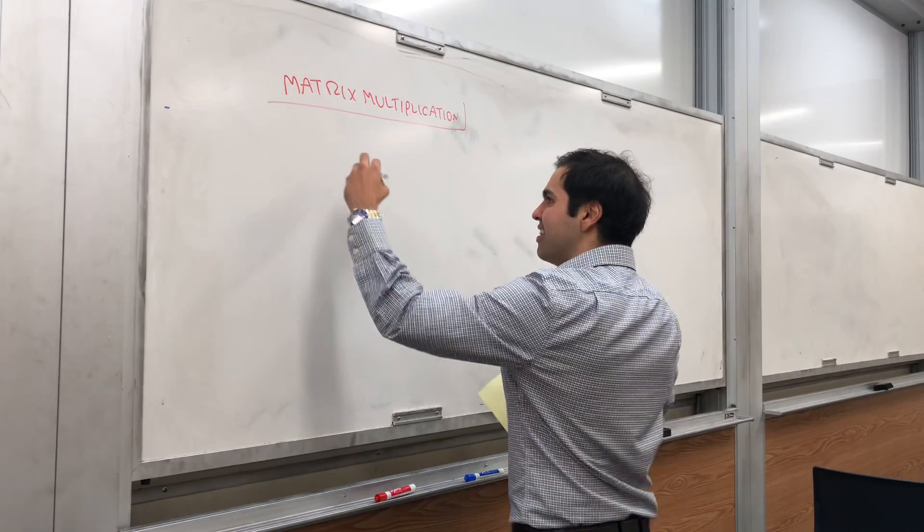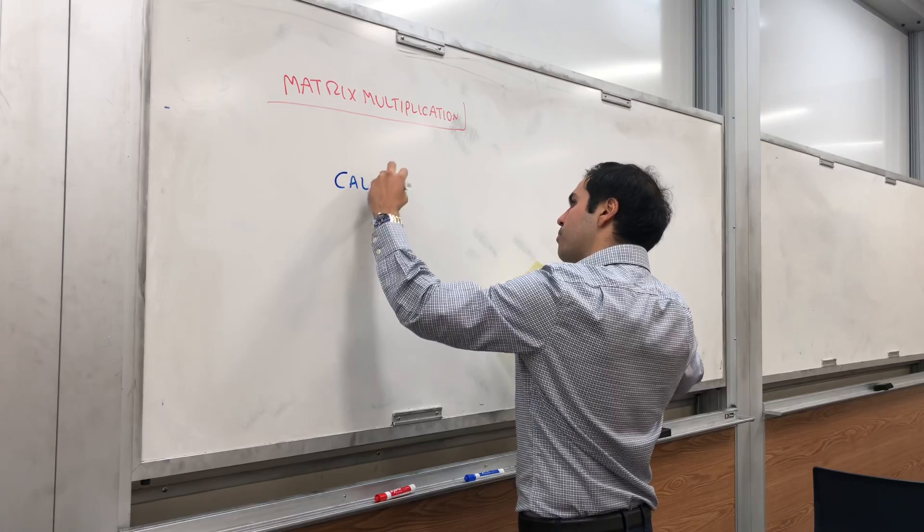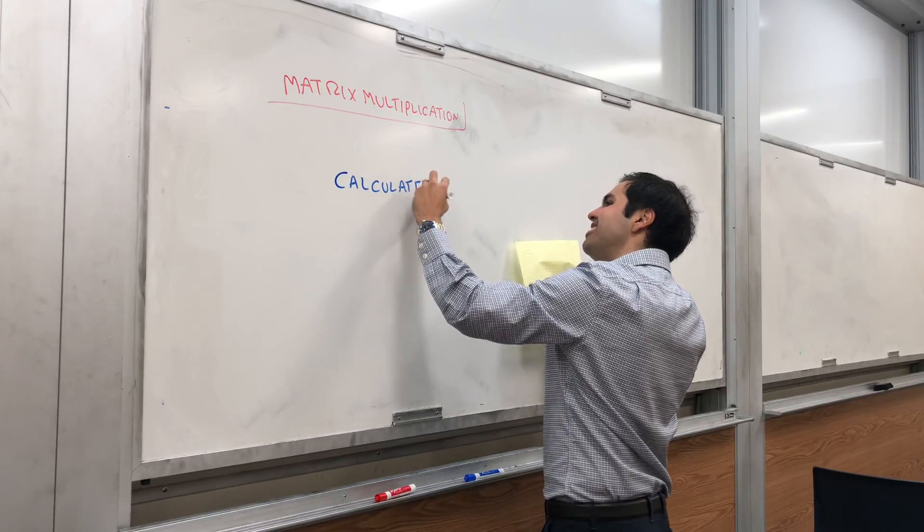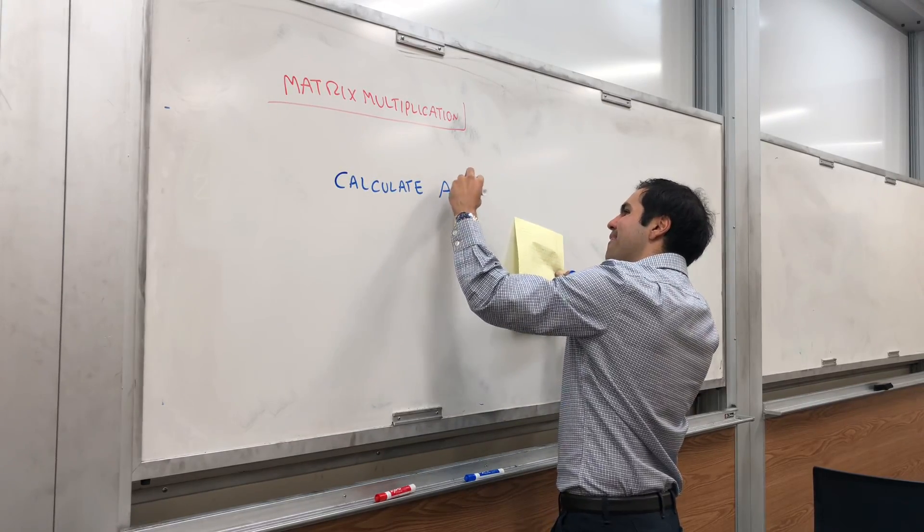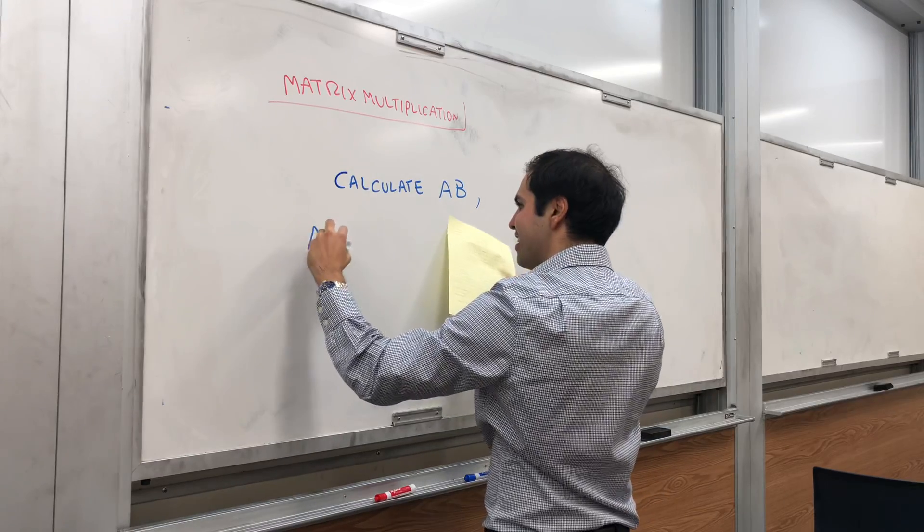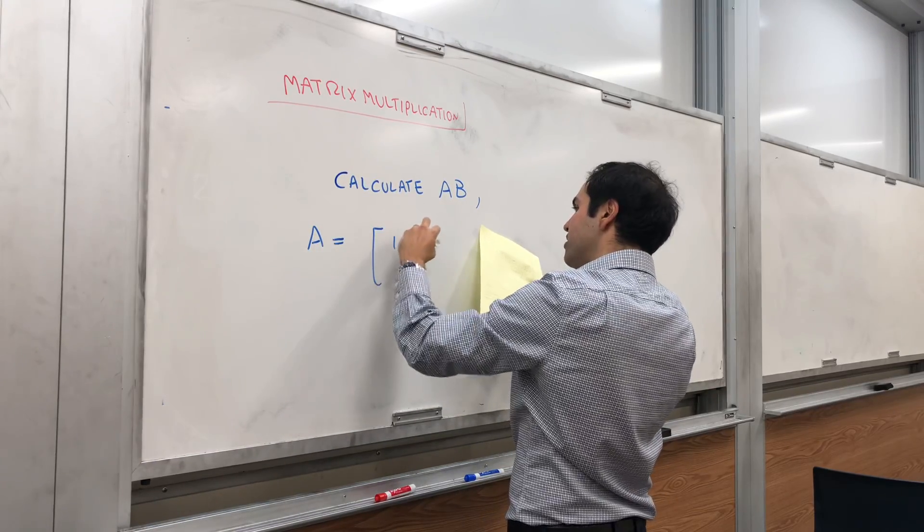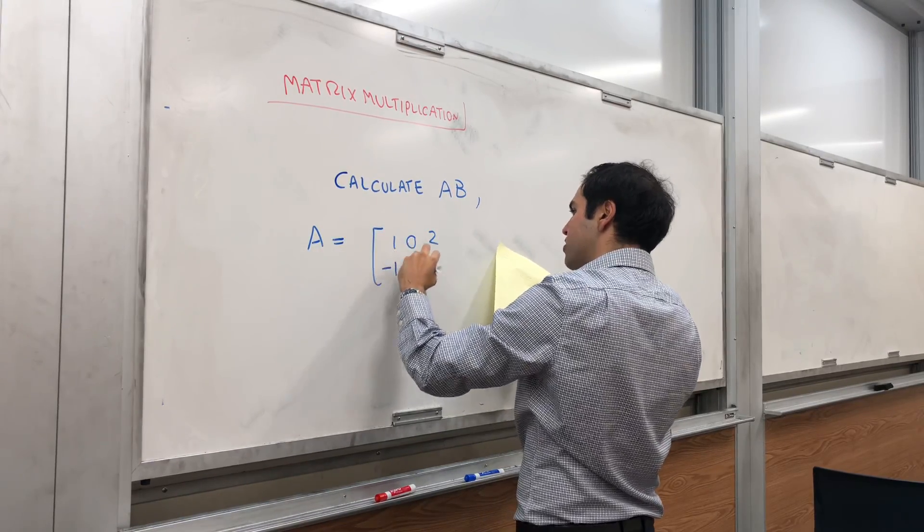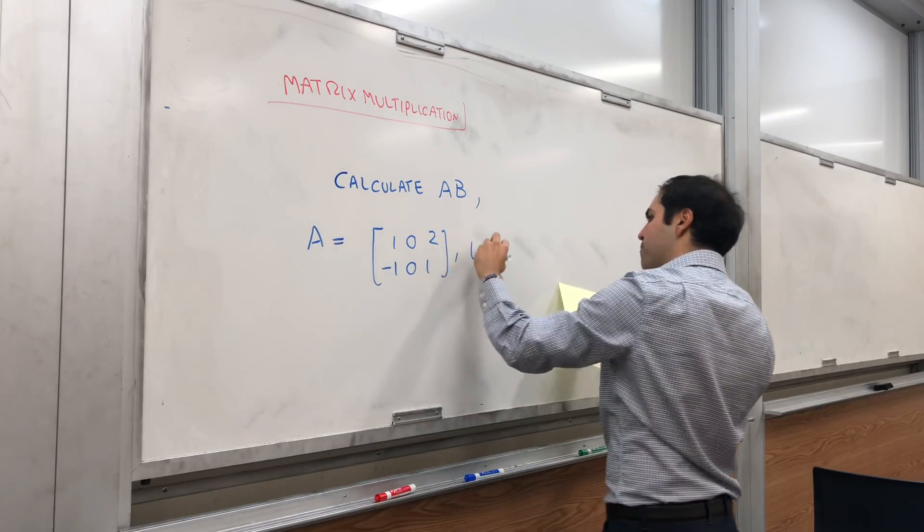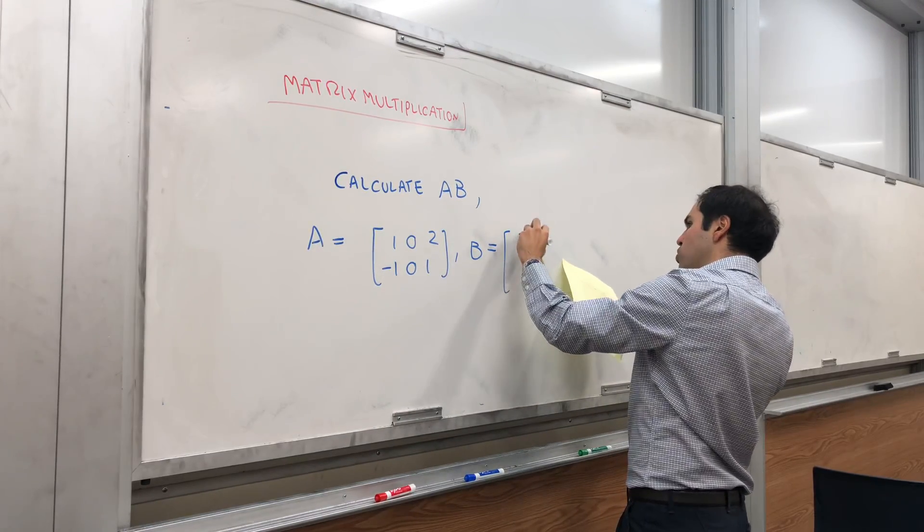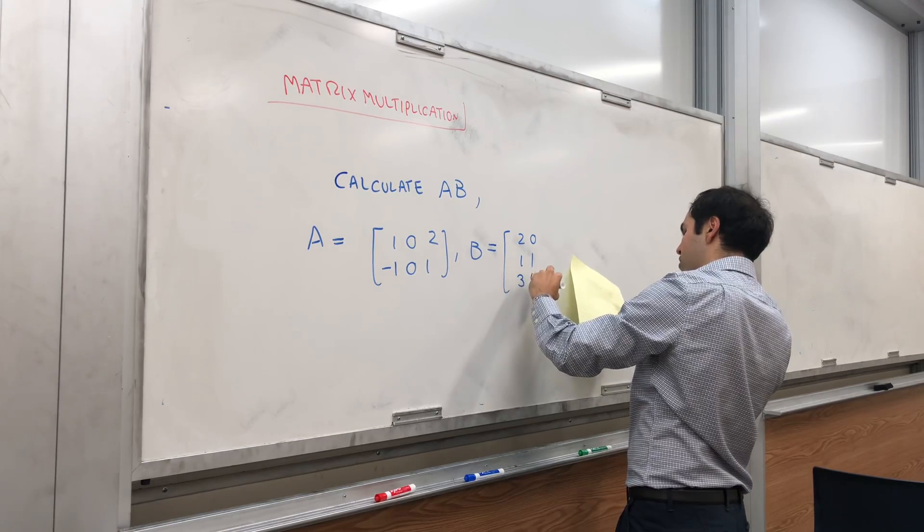So let's calculate AB. You'll see it's as easy as ABC AB where A is 1 0 2, -1 0 1 and B is 2 0 1, 1 3 4.